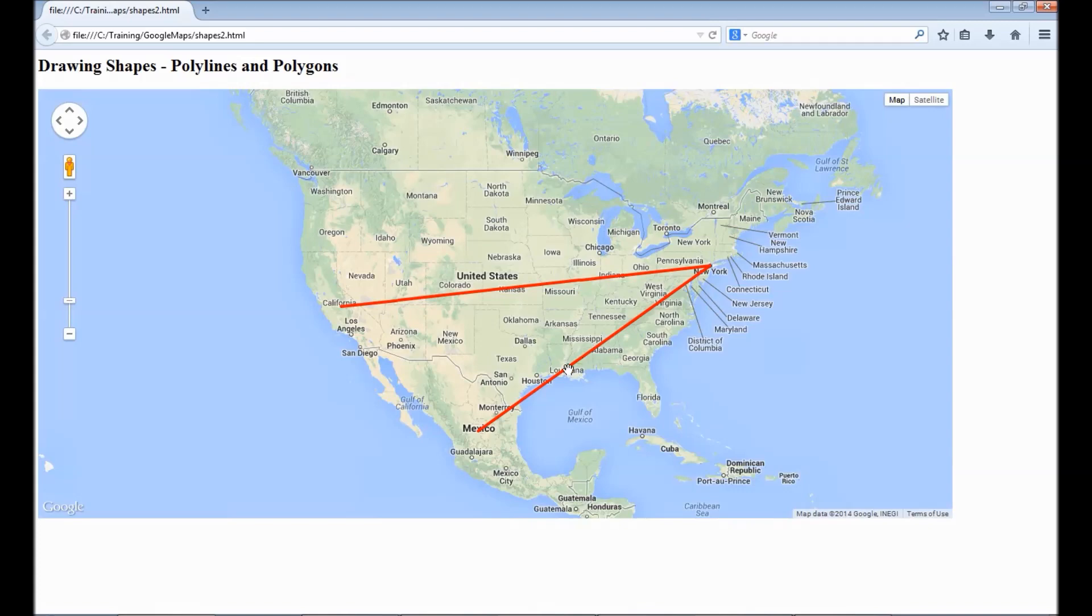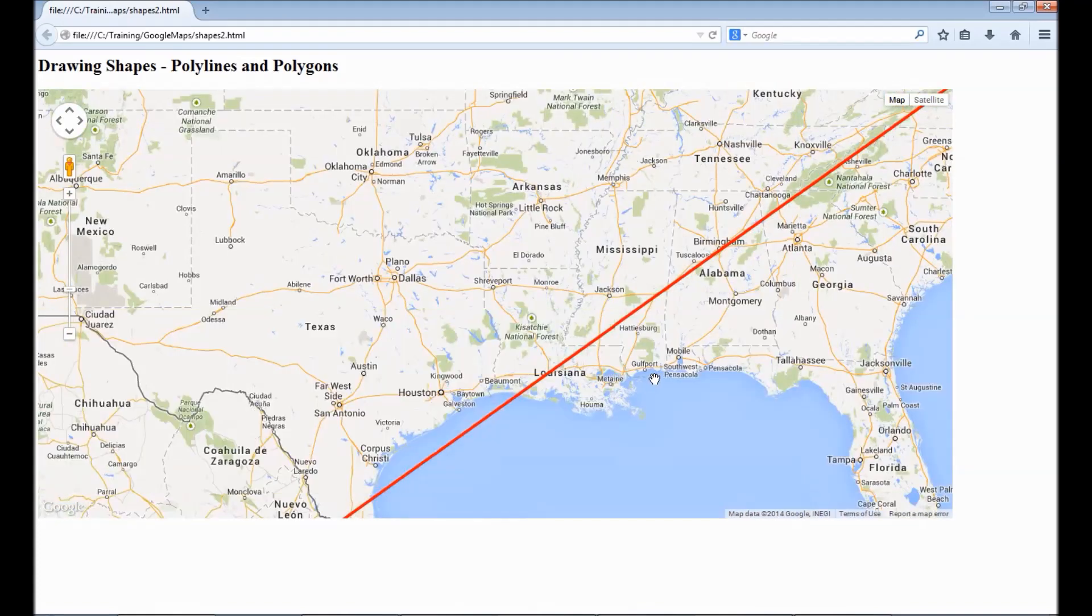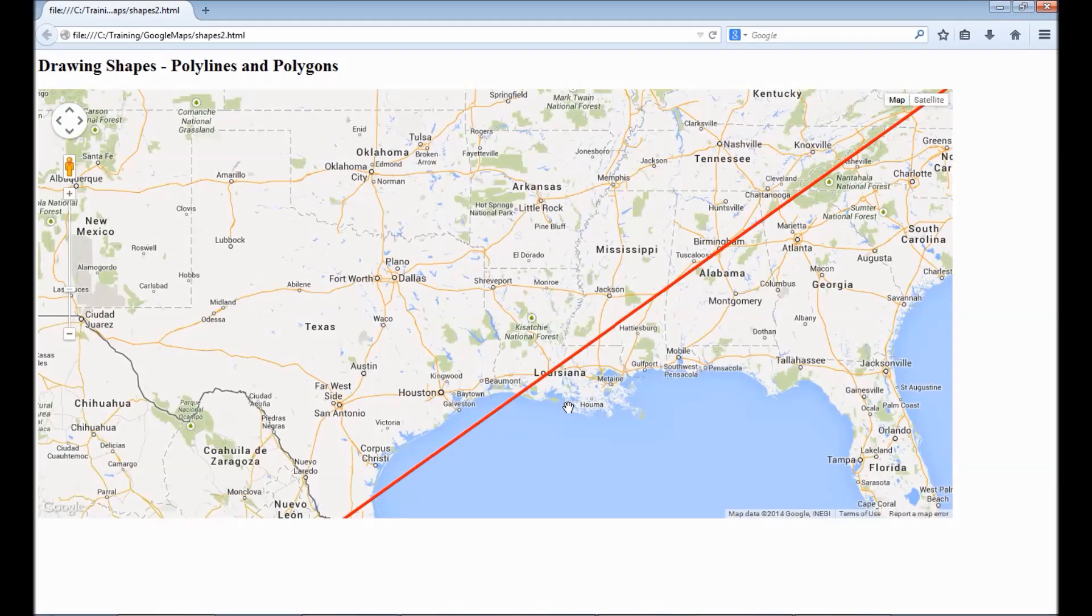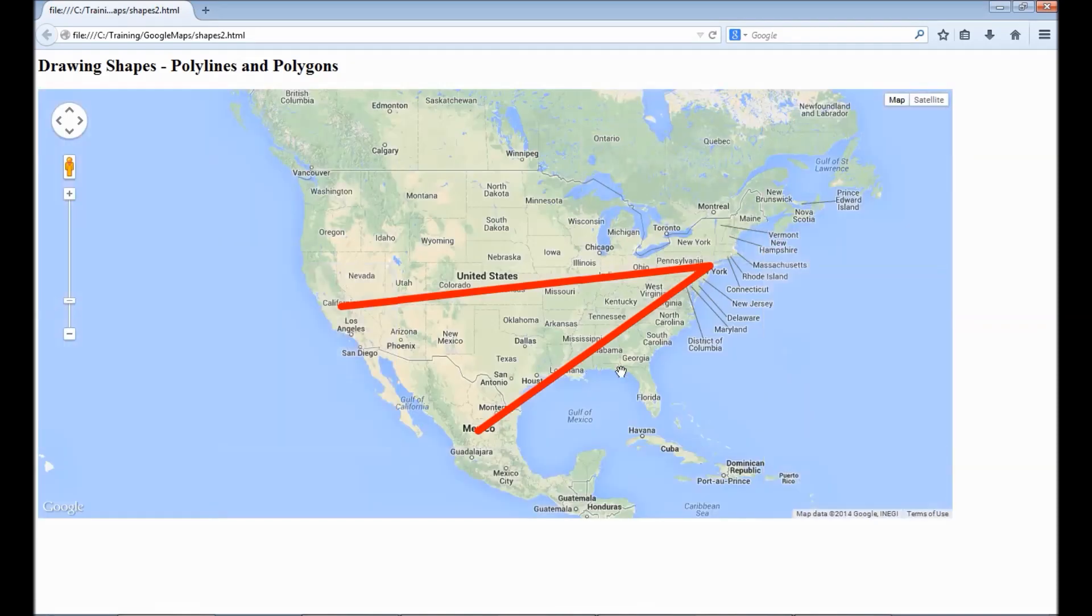As now we see it's changed to red and slightly change in the thickness. Let's modify it. Let's make it say 10. It's a pretty big line. So you see the thickness can be modified.